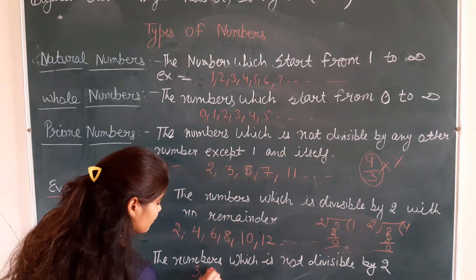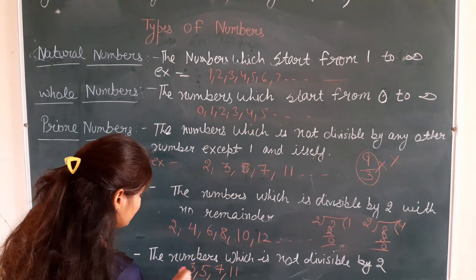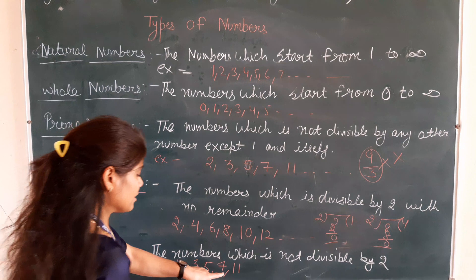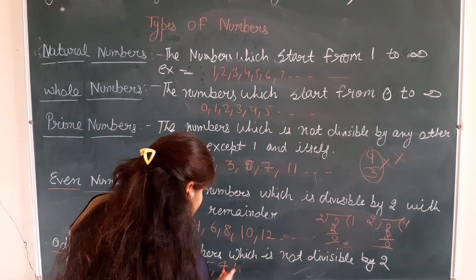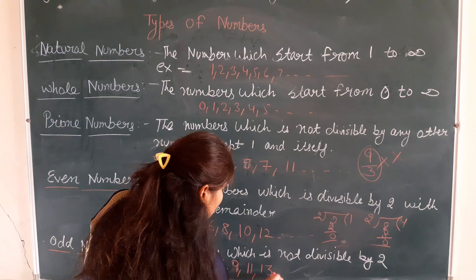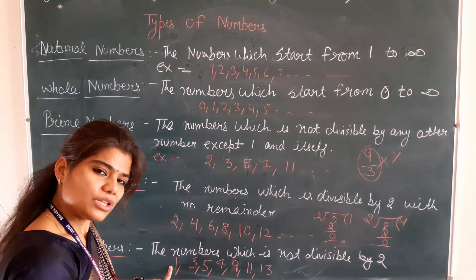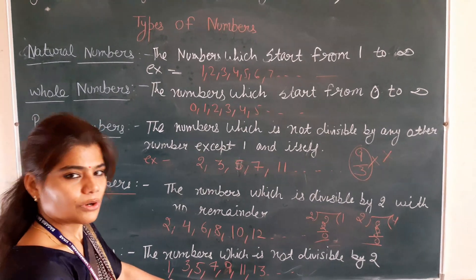Examples: 3, 5, 7, 11 - sorry, 1, 3, 5, 7, 9, 11, 13, which are called odd numbers.